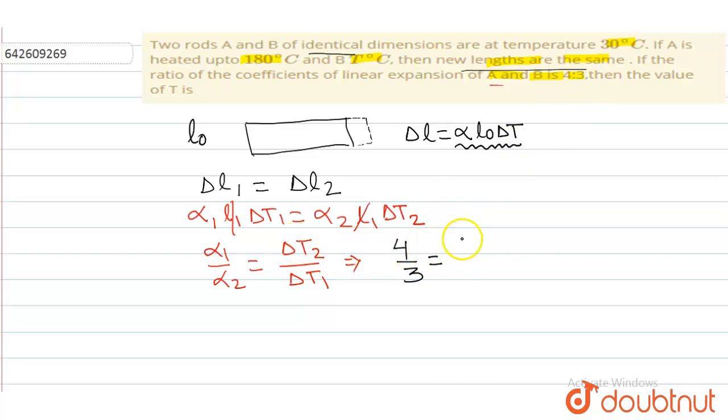Alpha 1 by alpha 2 is given as 4 by 3 equals delta t2.